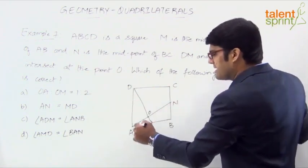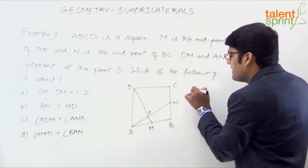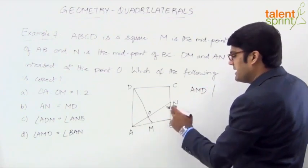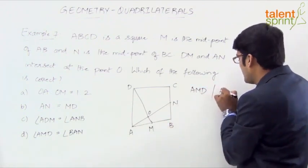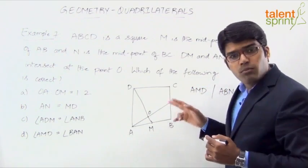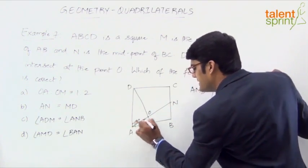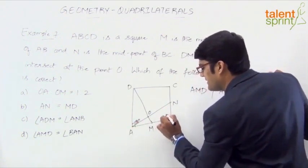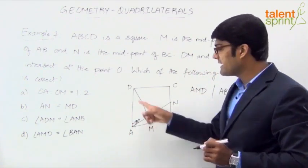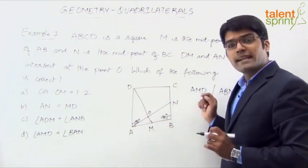Looking at these two triangles, we see there are two triangles. One triangle is AMD and the other is ABN. If you observe, both triangles are right-angle triangles — angle A in triangle AMD is 90 degrees, and angle B in triangle ABN is 90 degrees. So both are right-angle triangles.